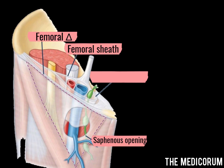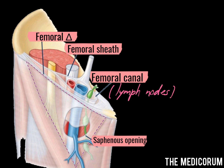In this picture, you can clearly spot the femoral sheath and femoral triangle. On the medial side of the femoral sheath, there is a somewhat conical-shaped structure — that is the femoral canal. The base or upper border of the femoral canal is known as the femoral ring, and the femoral canal contains some lymph nodes.